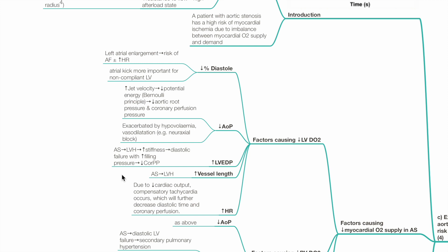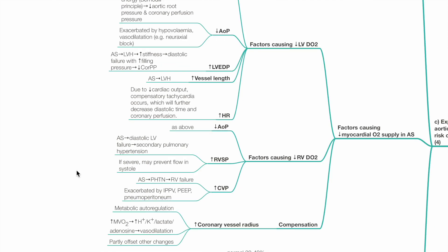Tachycardia reduces diastolic time and coronary blood flow. Tachycardia may be due to reduced cardiac output from aortic stenosis, which leads to compensatory tachycardia, which will further decrease diastolic time and coronary perfusion.